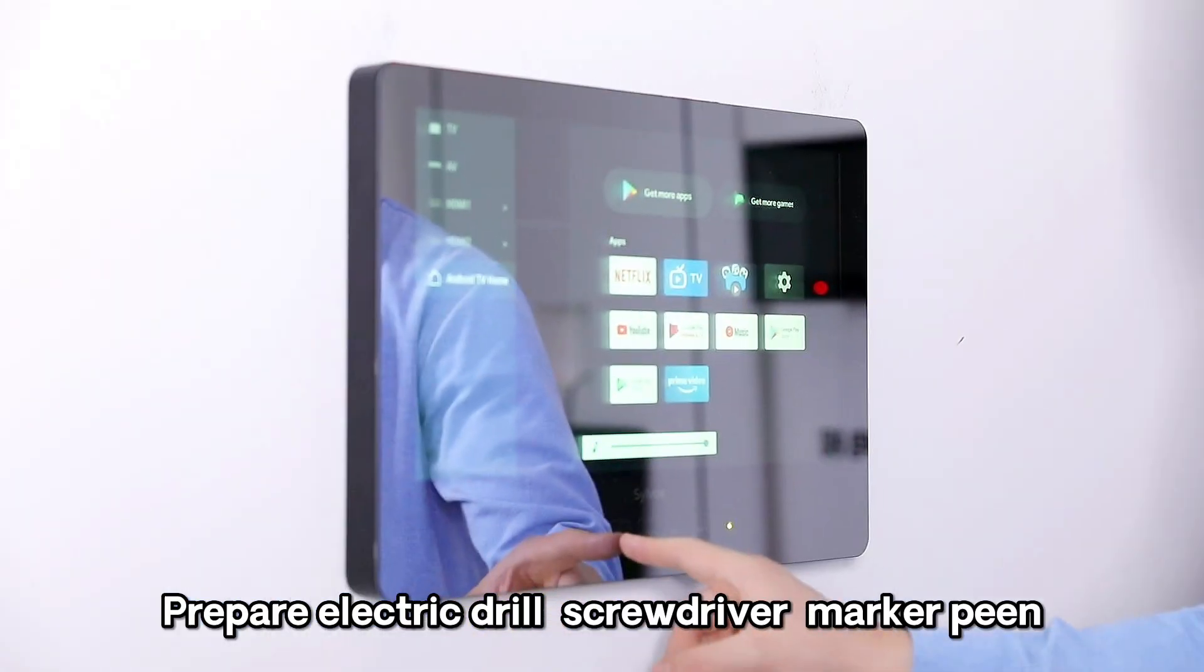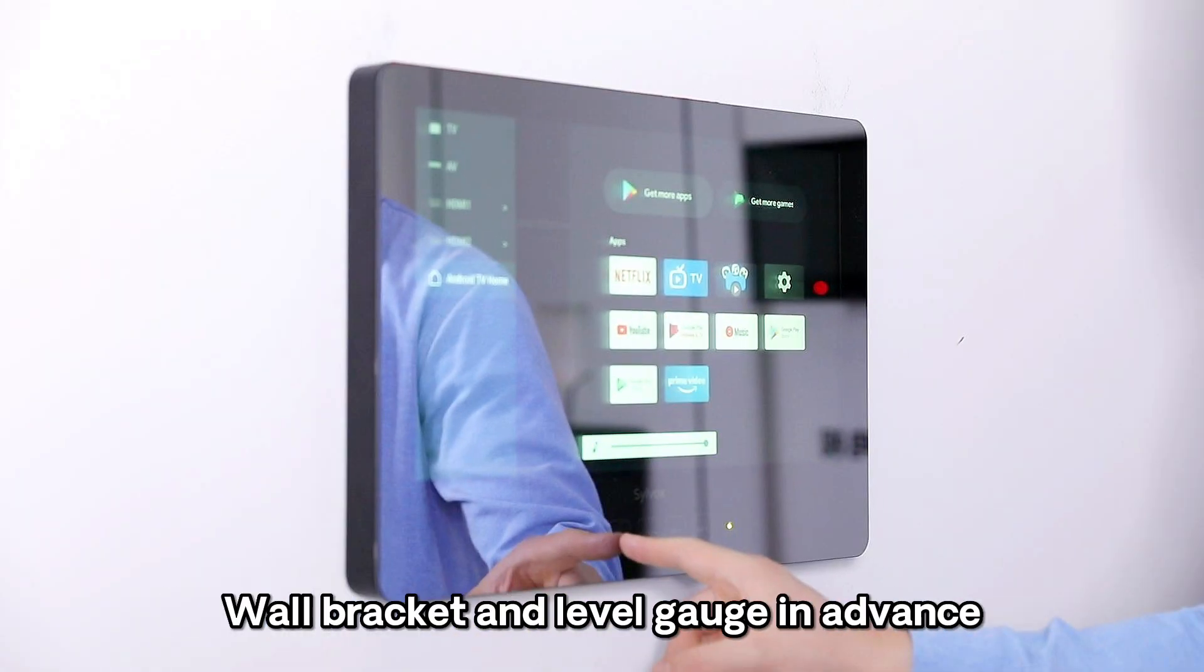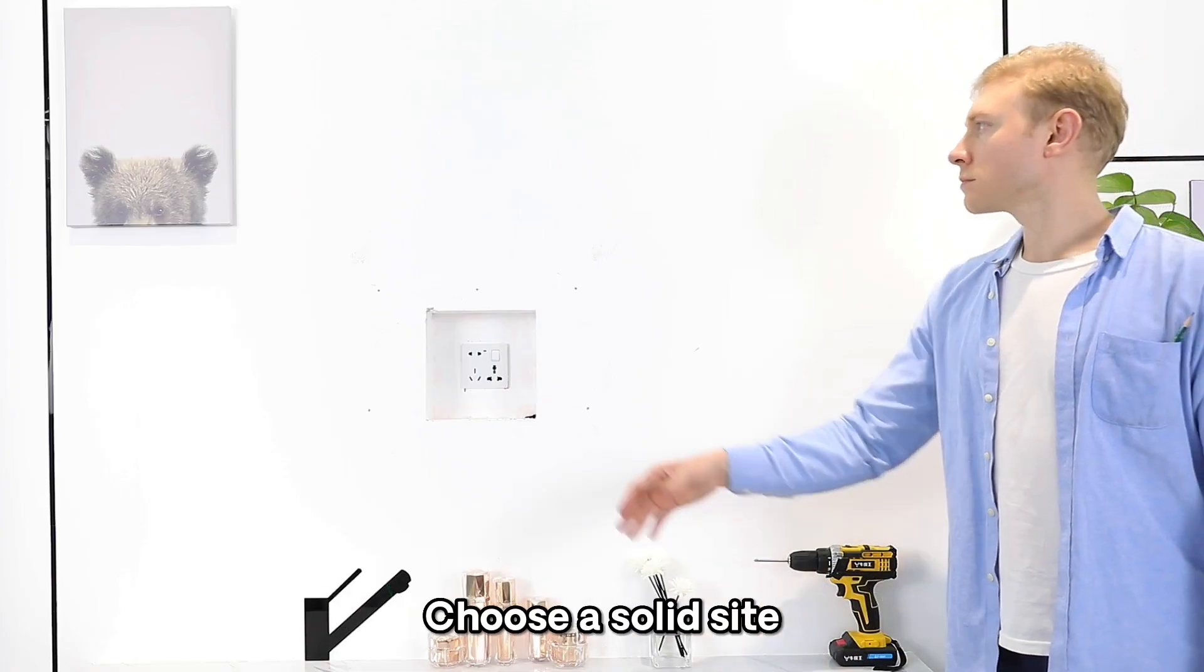Prepare electric drill, screwdriver, marker pen, wall bracket and level gauge in advance. Choose a solid side.